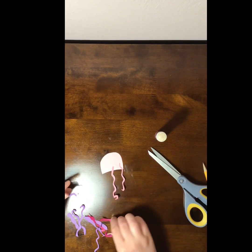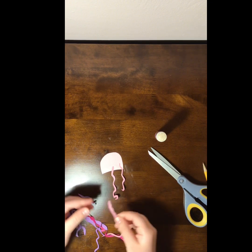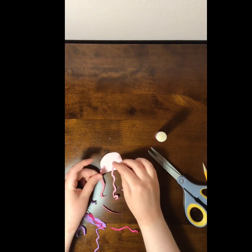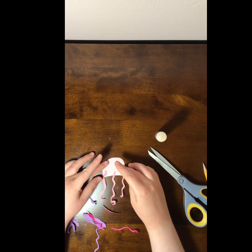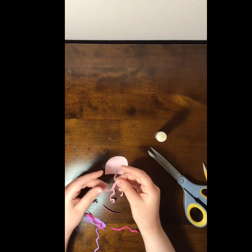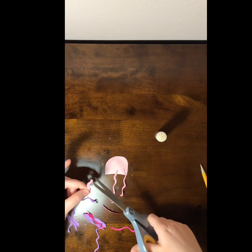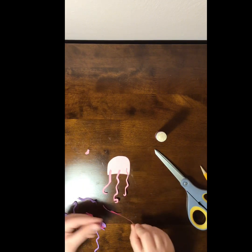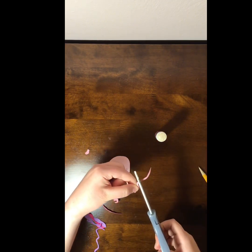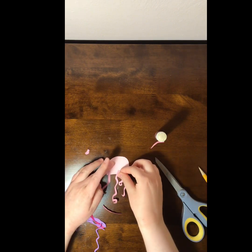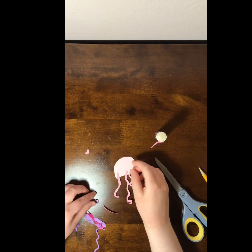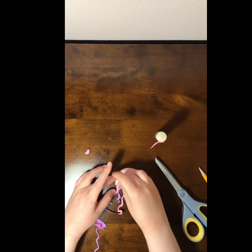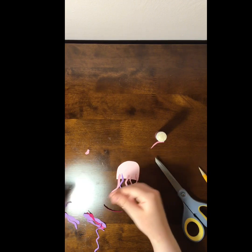But also you can trim your tentacles as well to make it varying in length. I did that. So I'm just kind of sticking them on there as I go. And I'll just let you guys see what I do with all of the rest of them.